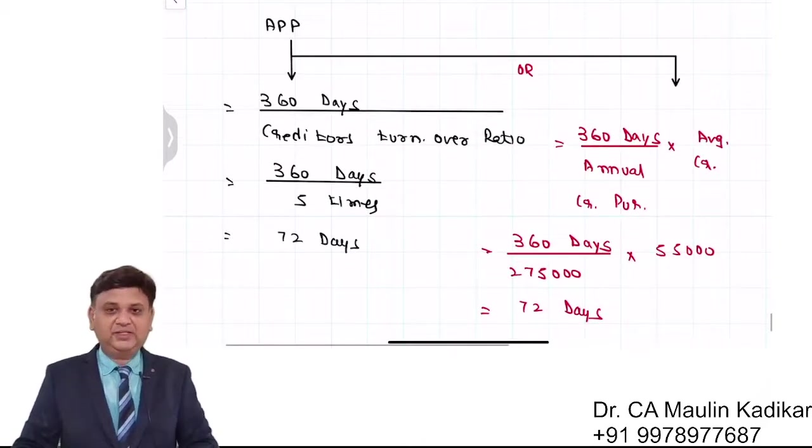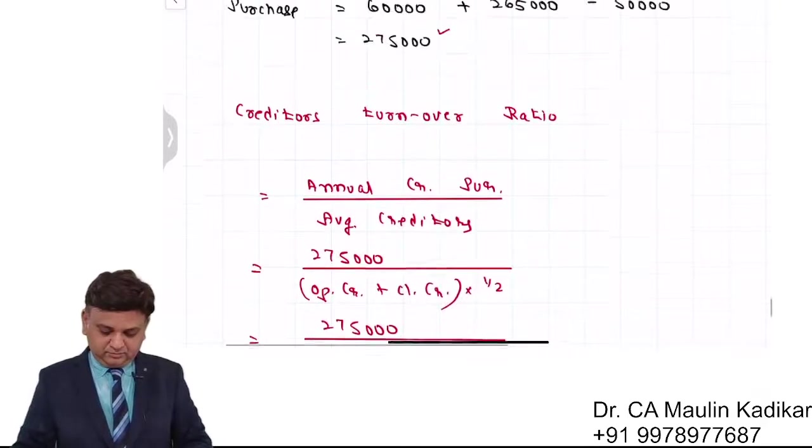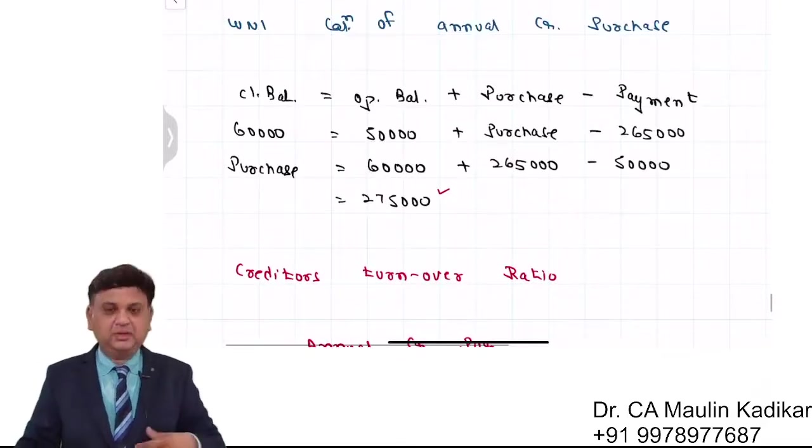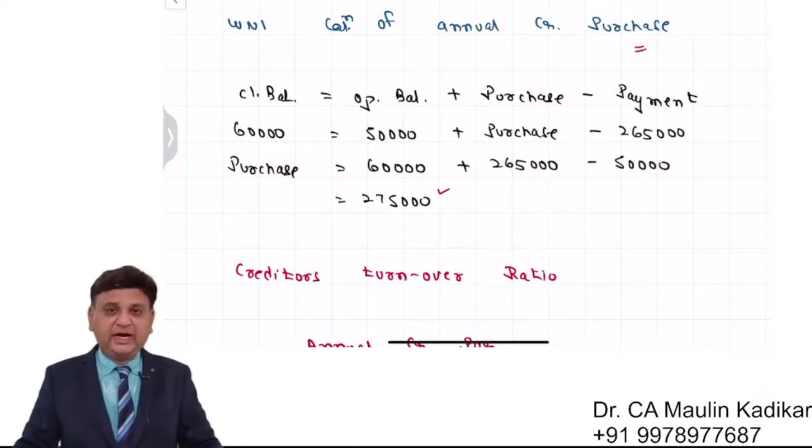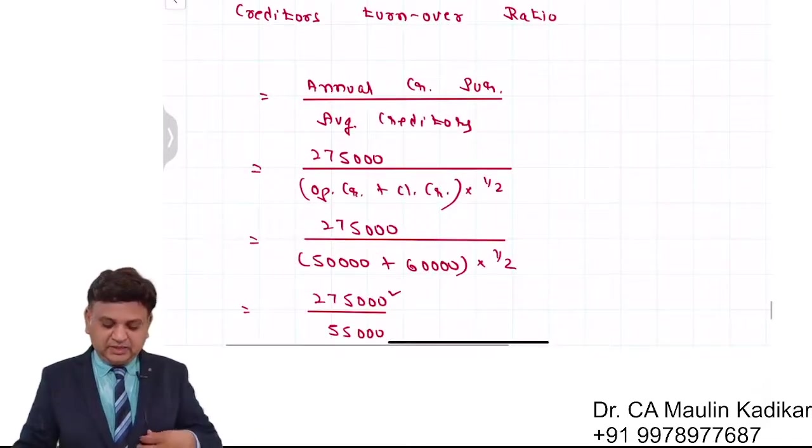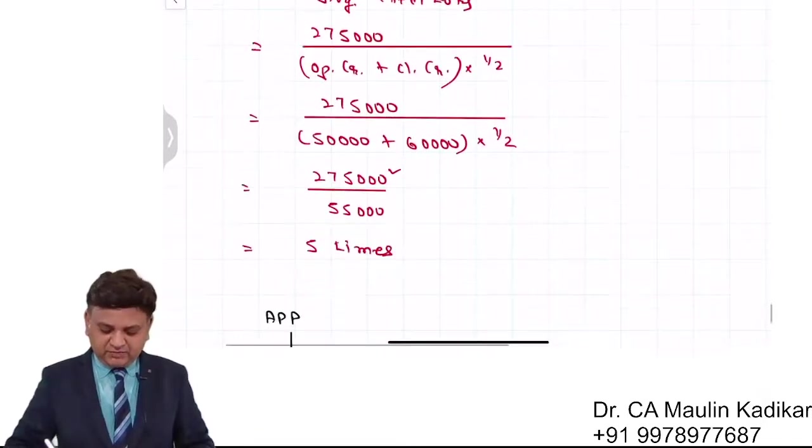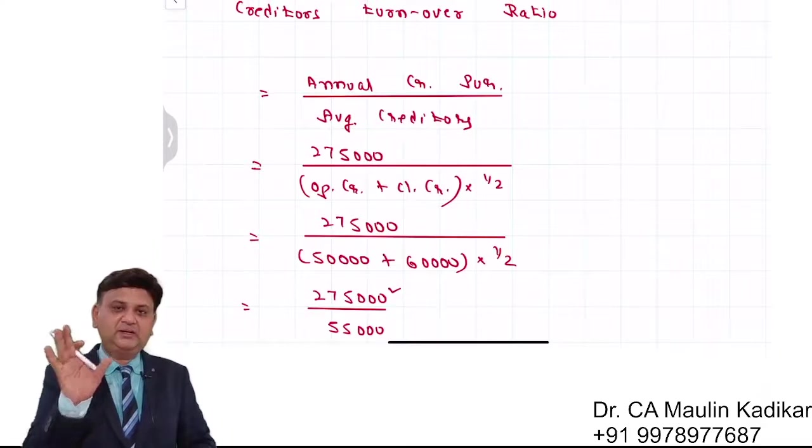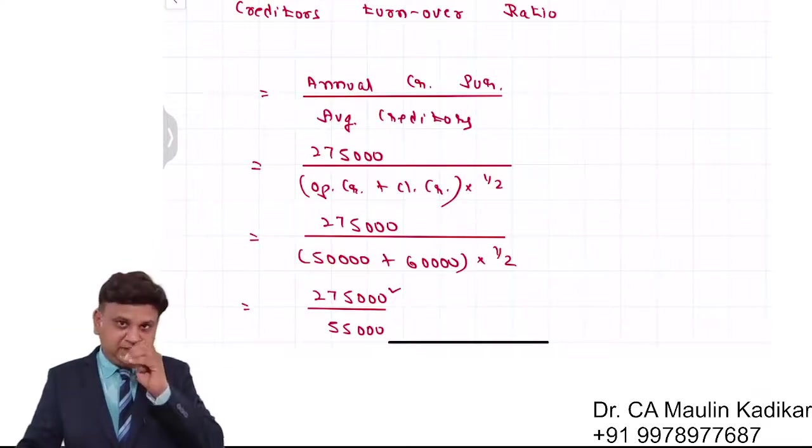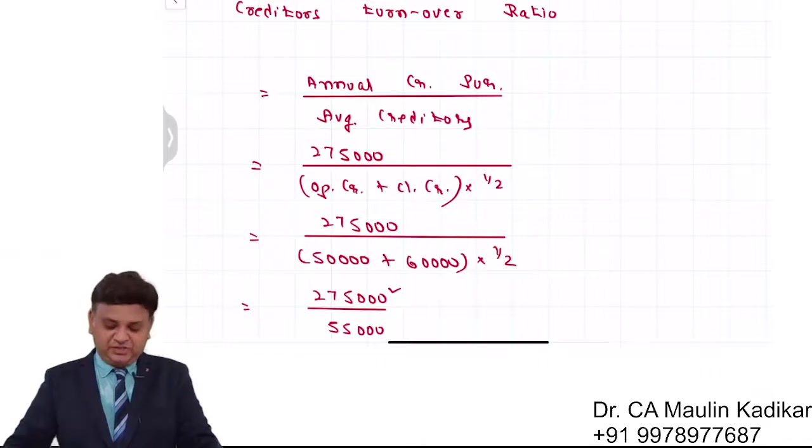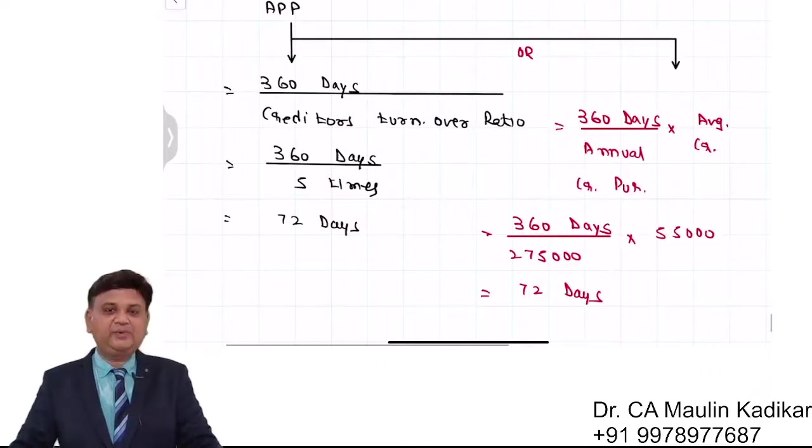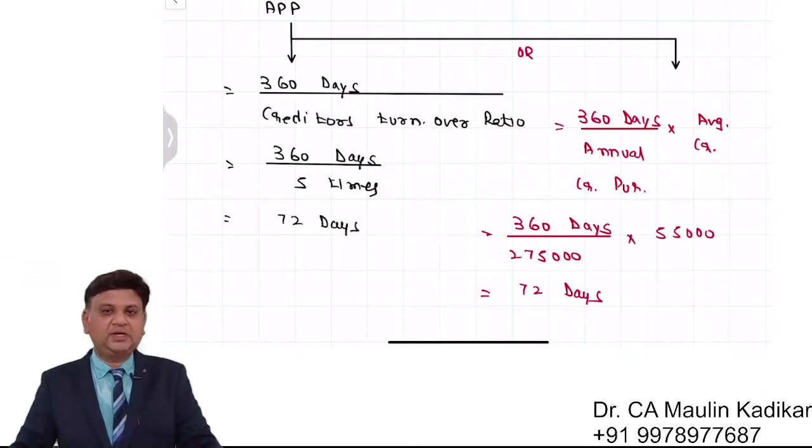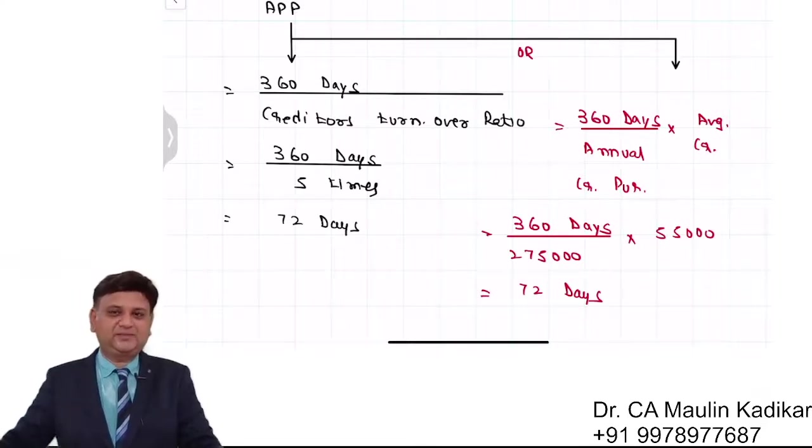This is the way we can calculate the answer. So over here, first of all we compute the annual credit purchase, then we make the calculation of the creditors turnover ratio. You can understand that the purchases of the entire year and creditors is as on date, so for the balance sheet item we will take average. And then average payment period is found - 360 days divided by creditors turnover ratio, or otherwise 360 days divided by purchase into average creditors.